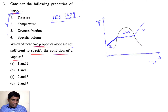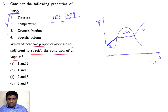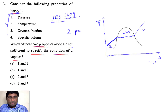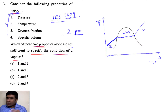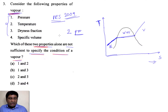Generally, we have seen that to identify the state of any fluid, we need only two properties, and these two properties should be independent of each other. If these two are dependent on each other, then dependent properties are not enough to identify the state of any fluid.